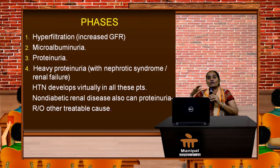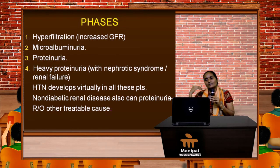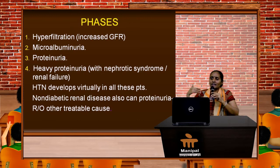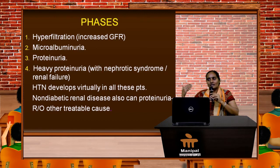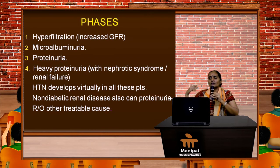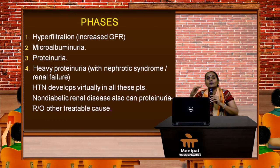Hypertension develops virtually in all of these patients because of stimulation of a cascade of mechanisms where renal mechanisms are completely shut down and the renin-angiotensin-aldosterone axis is afflicted. Non-diabetic renal disease can also produce proteinuria, but you need to rule out other treatable causes alongside diabetic nephropathy evaluation.